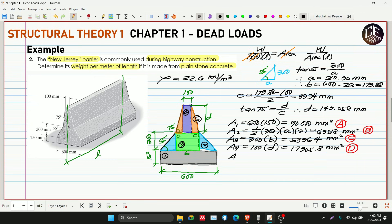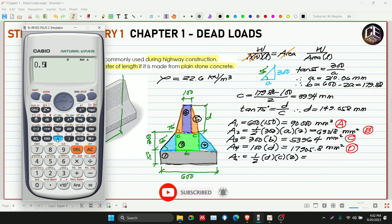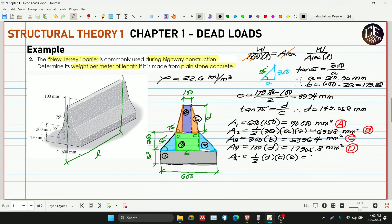And last, area 5. Dalawang triangle. One half of height, ang height natin is D, ang base natin is C, then multiplied by 2. One half of D height 149.58, then multiplied by base, ang base natin is C na 39.94, then multiplied by 2 kasi dalawang triangle. So store natin sa E. 5,974.23 millimeter squared.